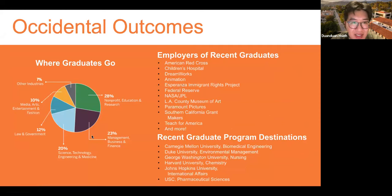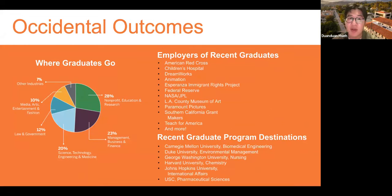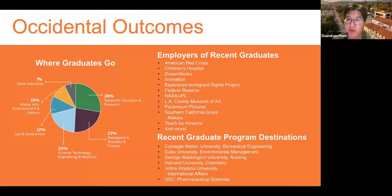Regarding the 6-year AB/JD program with Columbia: you do four years at Oxy and then one additional year at Columbia for pre-law, graduating with two bachelor's degrees and on track for a faster master's. The partnership exists because Columbia has many 3+2, 4+1, and 4+2 programs that they partner with liberal arts colleges around the country, and Oxy is one of them. If interested, definitely check out our website for details on the pre-law program.